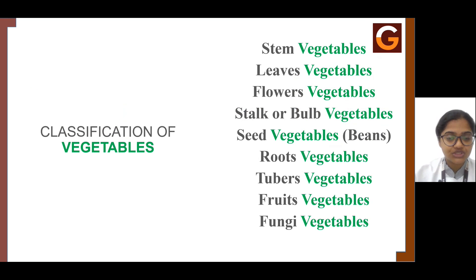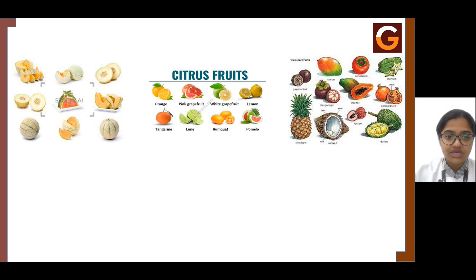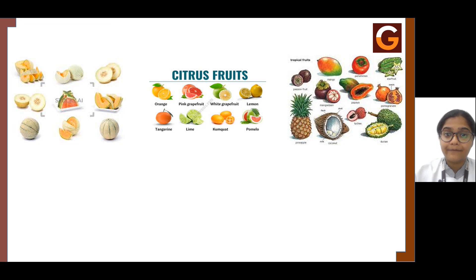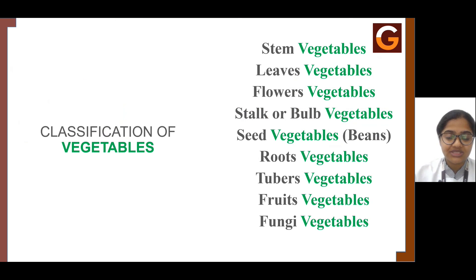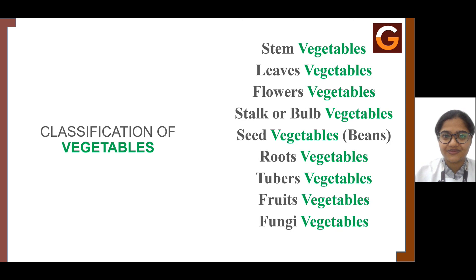So these are the classifications of fruits. To repeat, the different classifications of fruits include berries, pits, core, citrus, melon, and tropical fruits. The next chapter is the classification of vegetables, which we shall continue in the next session. Thank you.